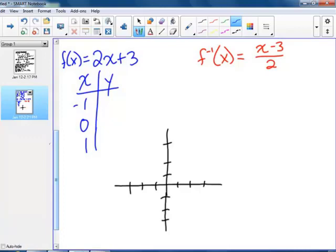So if I plug in negative 1, I'm going to have negative 2 plus 3 is 1. Plug in 0, I'll have 3. Plug in 1, 2 times 1 is 2, plus 3 is 5.